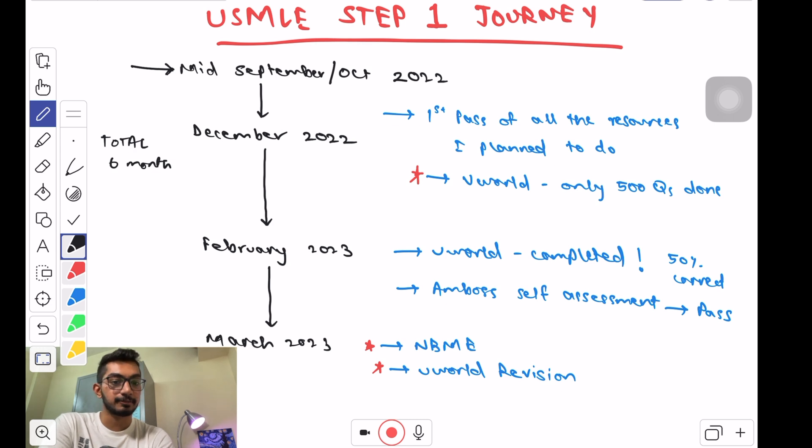I had a notebook which I kept for all the NBME questions that I got wrong and just wrote down the key points that I need to remember in order to get a similar question correct. The whole prep took around six months and I think it's much more realistic to do the USMLE Step 1 in six months, rather than all those videos saying that you can do USMLE Step 1 in three months or four months.